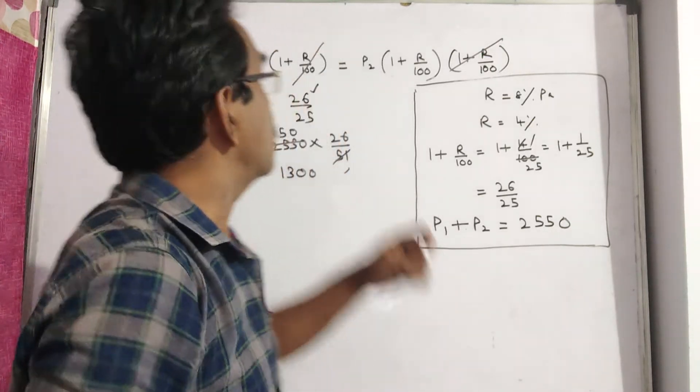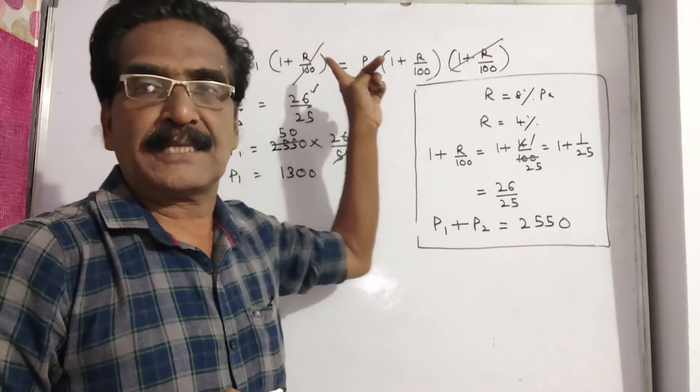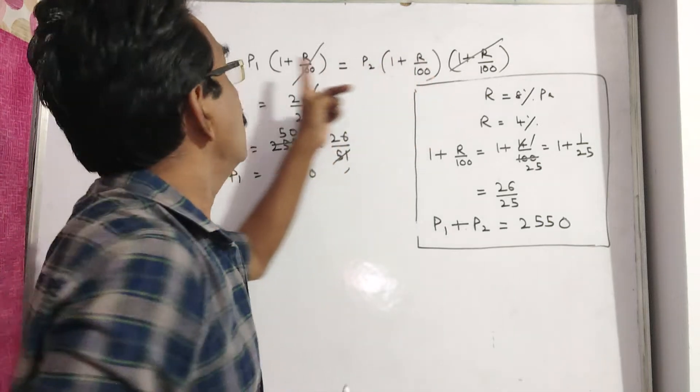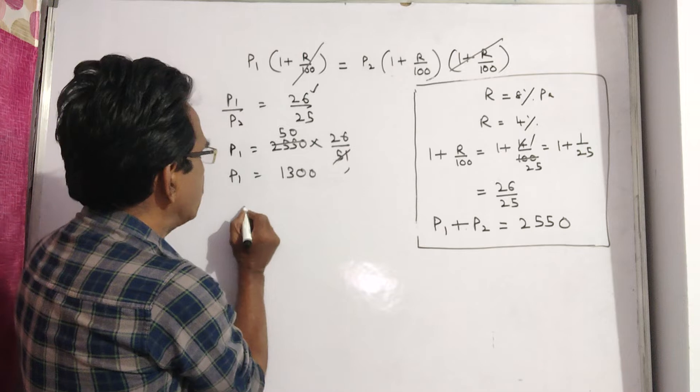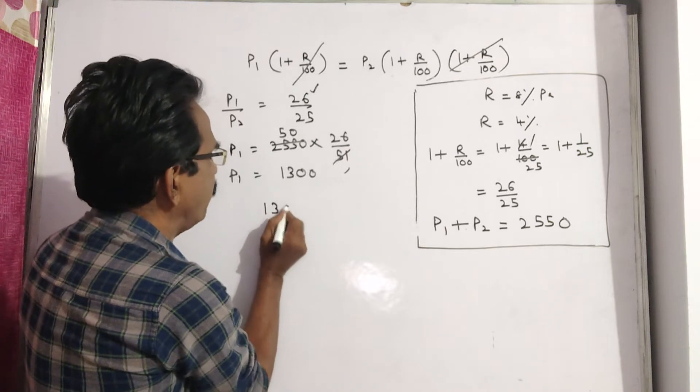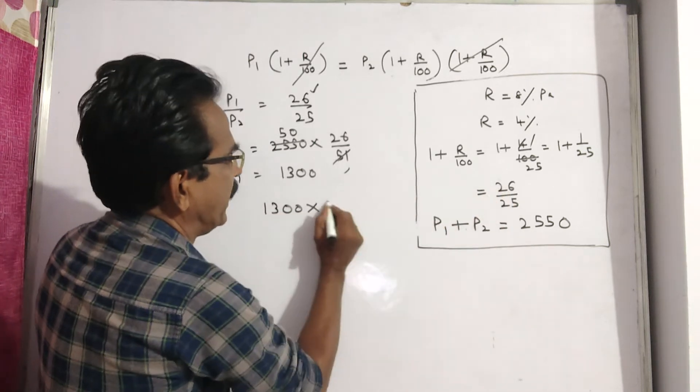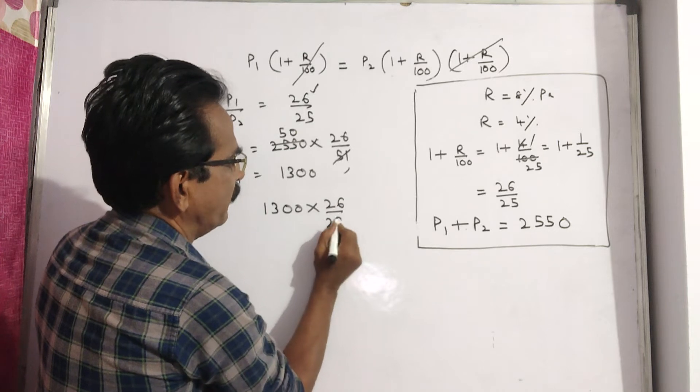We want the value of the installment. Installment equals P1 into 1 plus R by 100. Either formula works, both are equal. Installment value equals P1 into 1 plus R by 100.